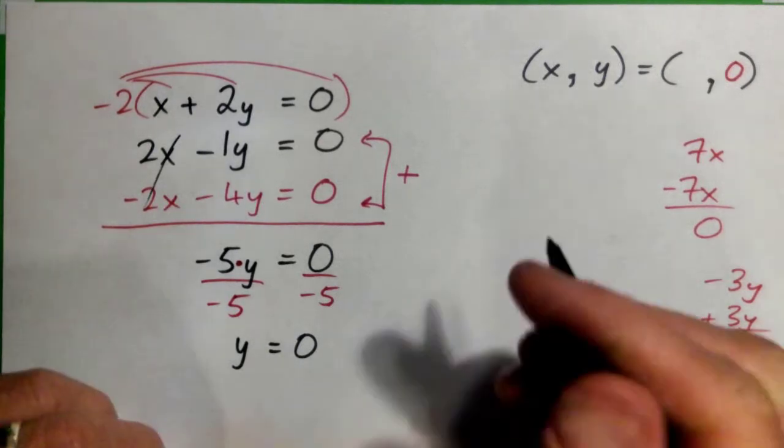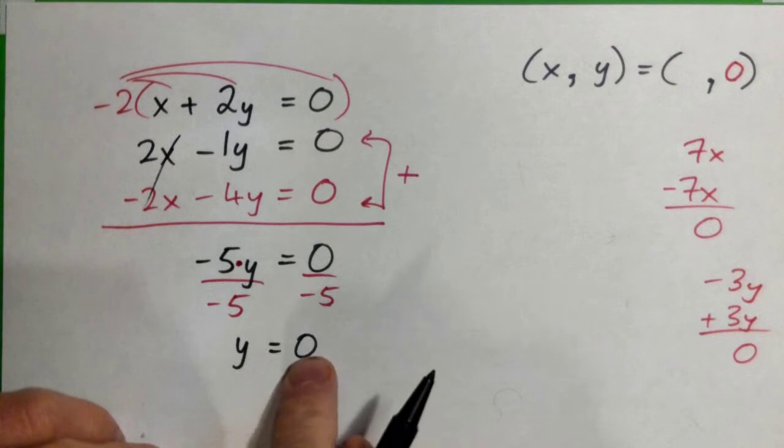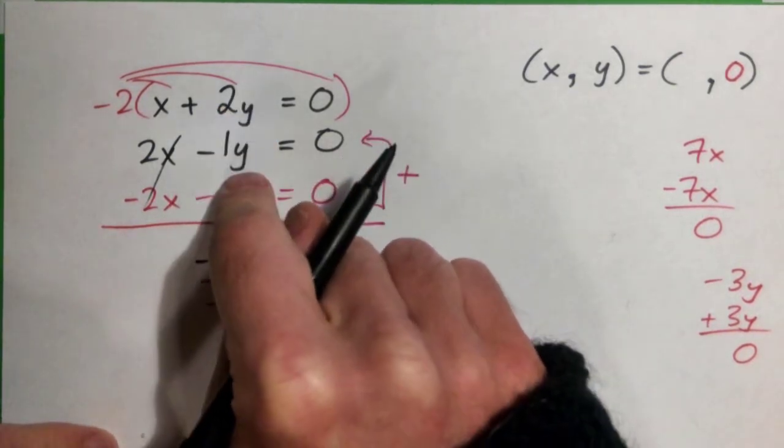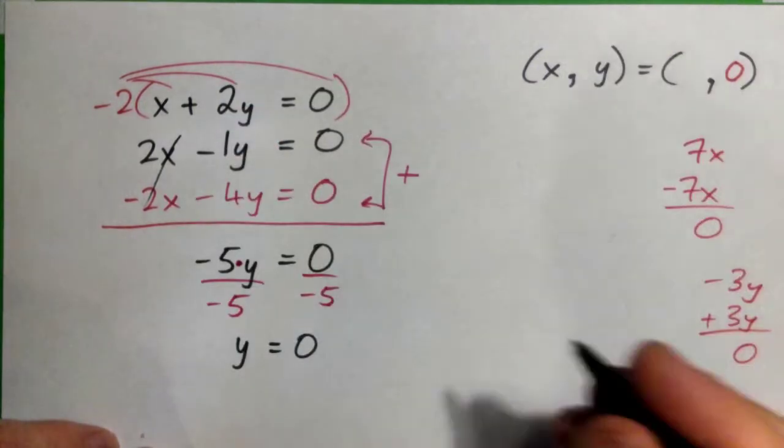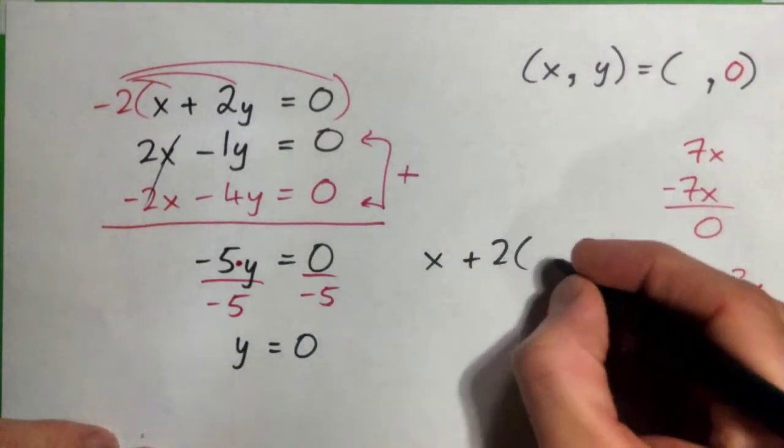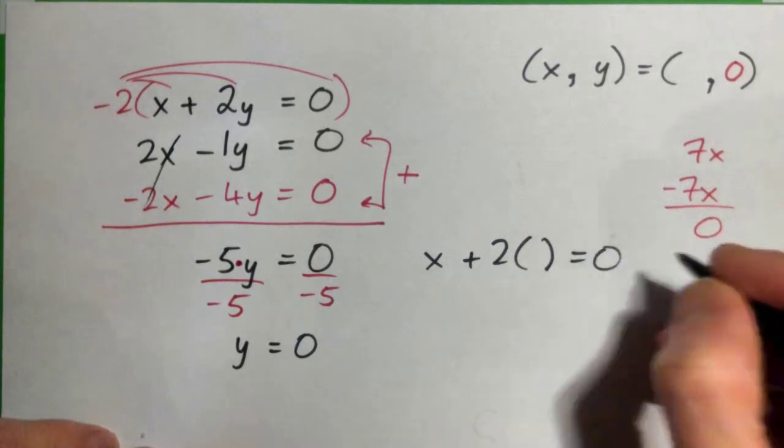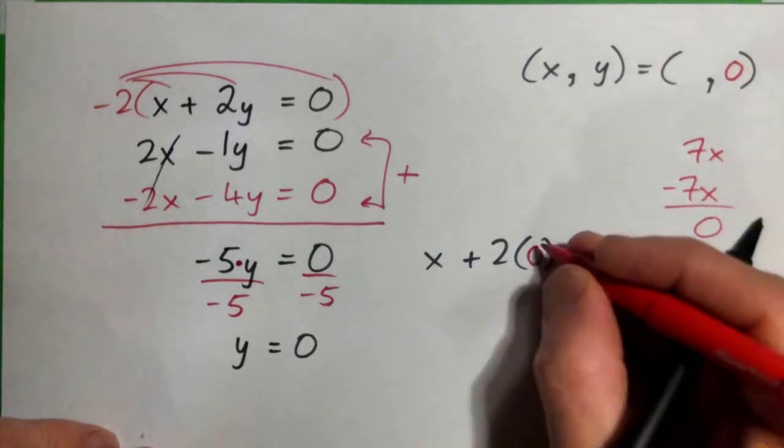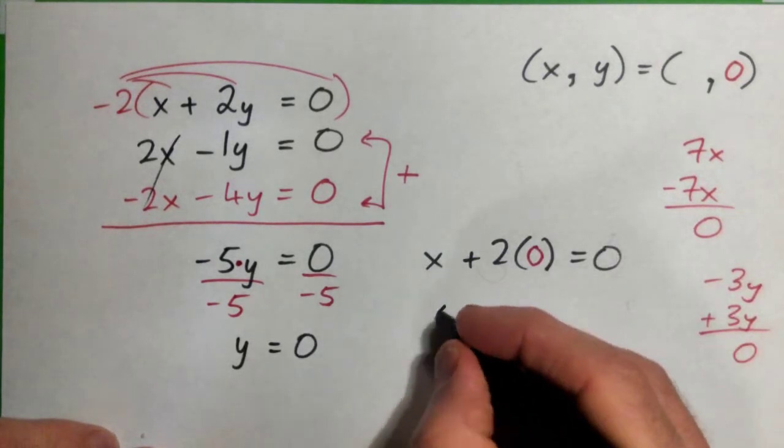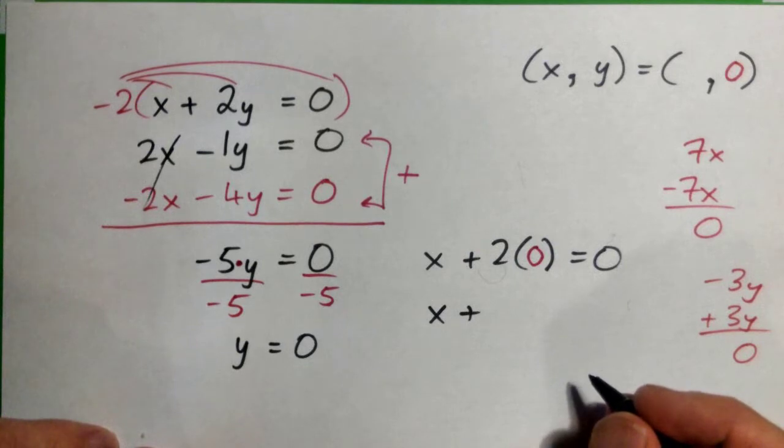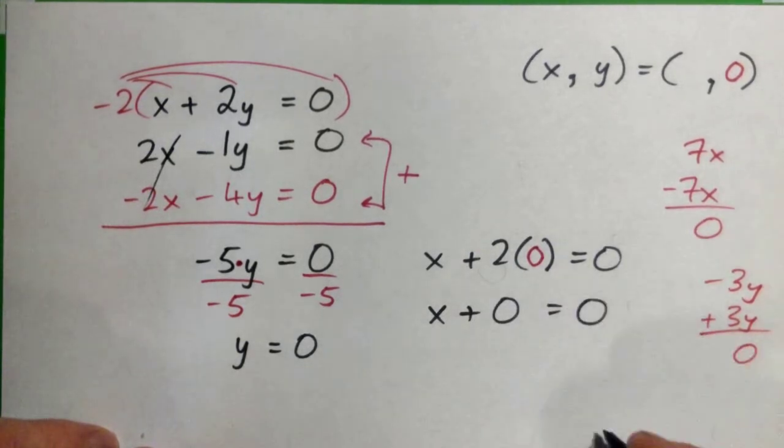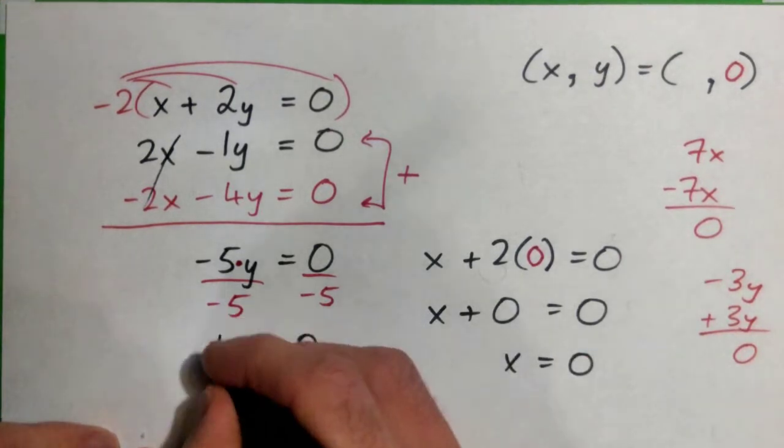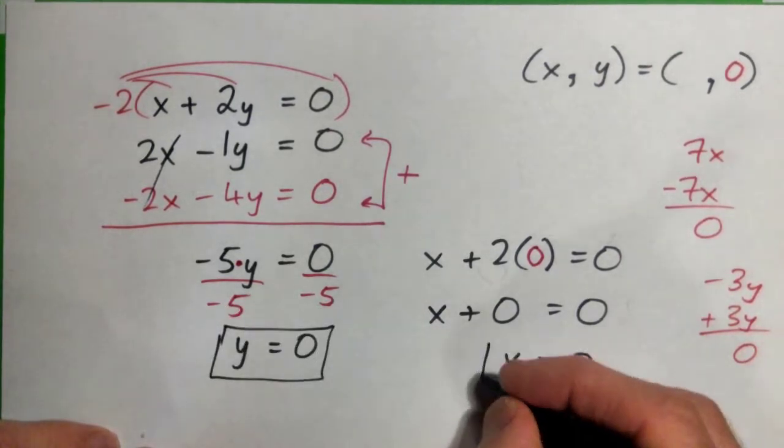You can plug this in for y in either of the equations, the top one or the bottom one, doesn't matter. Let's pick the top one: x plus 2y equals 0. We figured out that y was 0, so we plug 0 in for y. So now it's x plus 0 equals 0, which makes x equals 0.